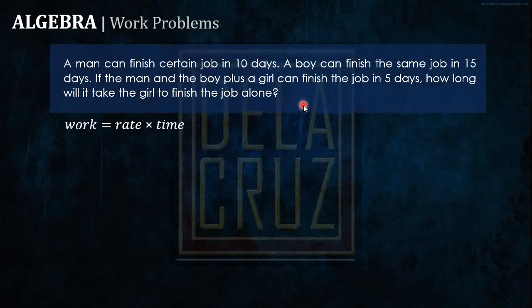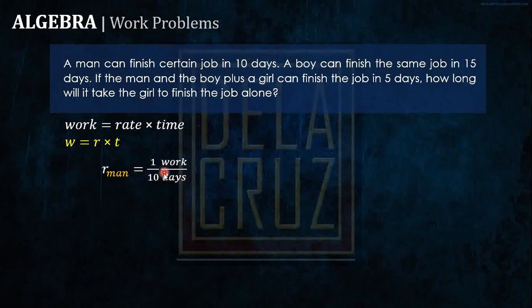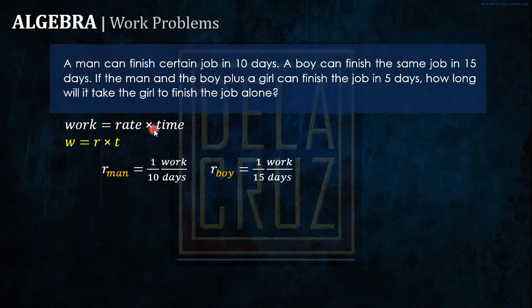The basic formula is: work is equal to rate times time. We can express this as W = R × T. The rate of the man is one work in 10 days, and the boy can finish the work in 15 days. Let's equate this using work equals rate times time.